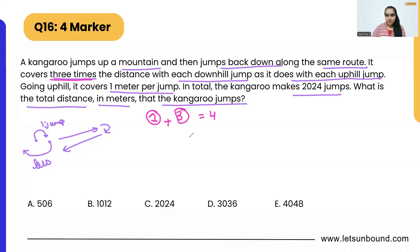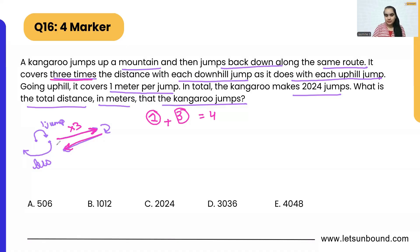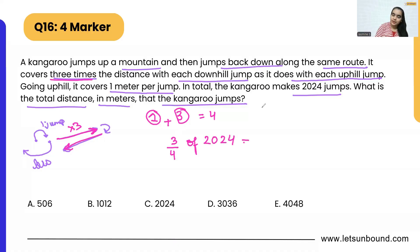From this ratio, the total number of jumps going uphill will be three times the number of jumps going downhill — because uphill jumps are shorter, it takes more of them. So three-fourths of 2024 is going to be the number of jumps the kangaroo makes going uphill.